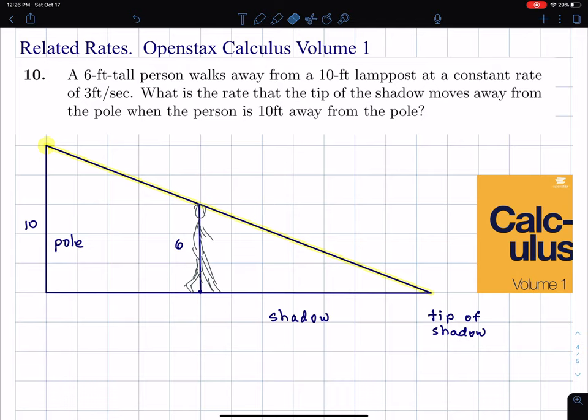this is number 10 from Chapter 4 on related rates. A 6-foot-tall person walks away from a 10-foot-tall lamppost at a constant rate of 3 feet per second. What is the rate that the tip of the shadow moves away from the pole when the person is 10 feet away from the pole?